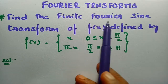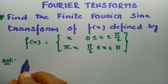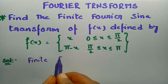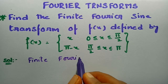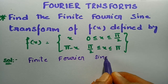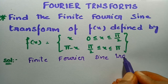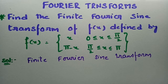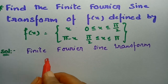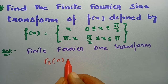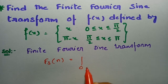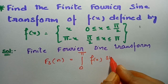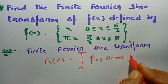We have to find the finite Fourier sine transforms. The formula for the finite Fourier sine transform of f(x) is the integral from 0 to π of f(x) · sin(nx) dx.